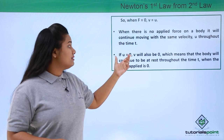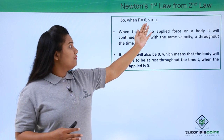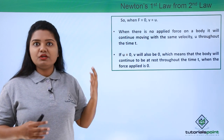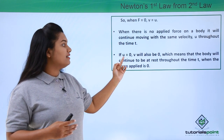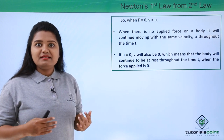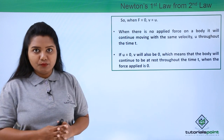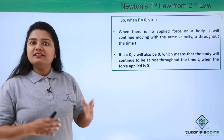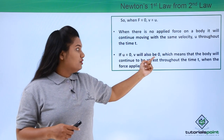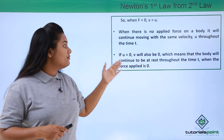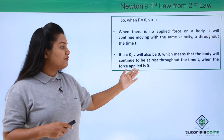And if u equals zero — meaning the initial velocity is zero — since v is equal to u, the final velocity of the body will also be equal to zero. That means the object is at rest, since its initial and final velocity are both zero throughout the time period. So if u equals zero, v will also be equal to zero, meaning the body will continue to be at rest throughout time t when the applied force is zero.